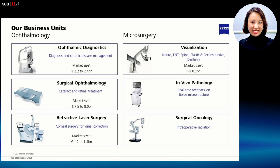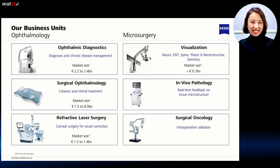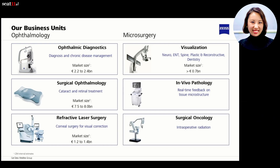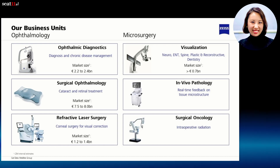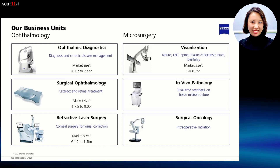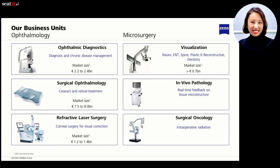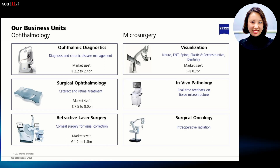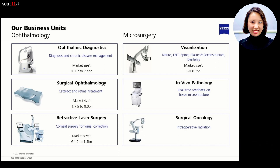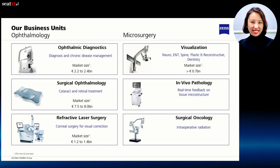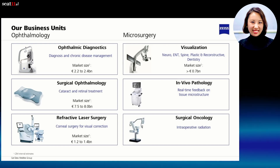The microsurgery business unit can be divided into three areas. Visualization provides solutions for minimally invasive surgical treatments of tumors and vascular conditions like aneurysm. Other key areas are ENT, reconstructive, and dental or spinal surgery. Surgical oncology includes intraoperative radiation, characterized by the targeted treatment of tumors using low-energy X-rays directly and precisely administered into the tumor.